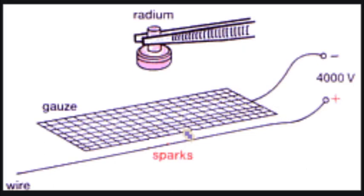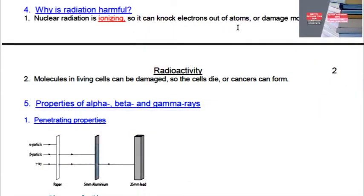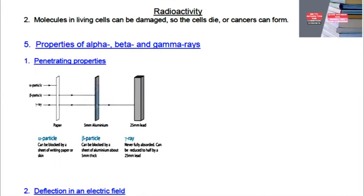Now we are going to talk about why radiation is very harmful. Nuclear radiation is harmful because it is ionizing — it can knock electrons out of atoms and damage molecules. Molecules in living cells can be damaged, so the cells die or cancers can form. Now we're going to talk about the three types of radiation: alpha, beta, and gamma — starting with their penetrating abilities.